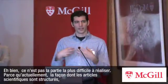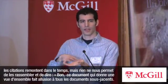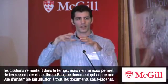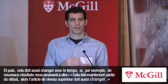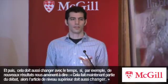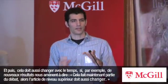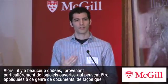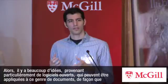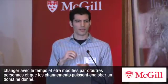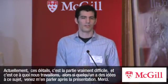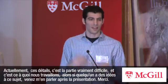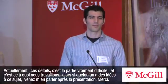Currently the way science papers are organized, there's the citation flow backwards in time, but there's nothing that allows you to group a set of papers and say this overview paper refers to all of these papers below it. And not only that, but it also has to change with time — if some new result comes in that says this is now in debate, then the paper on top of it has to change. There are many ideas, especially from open source software, that can be applied to these kinds of documents so that they change with time, other people can edit them, and the changes can encompass a given field. But right now, those details are the really hard part, and that's what we're working on. If anybody has any ideas, please come talk to me afterwards.